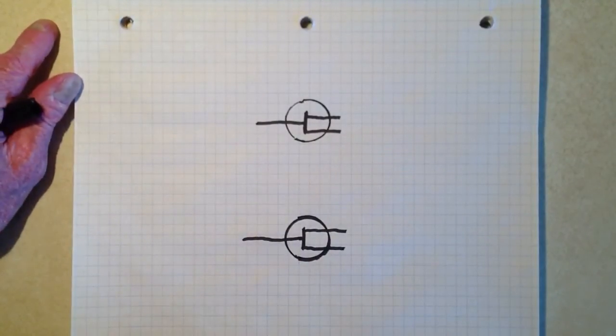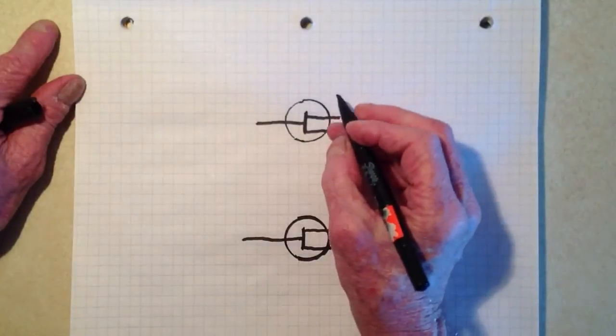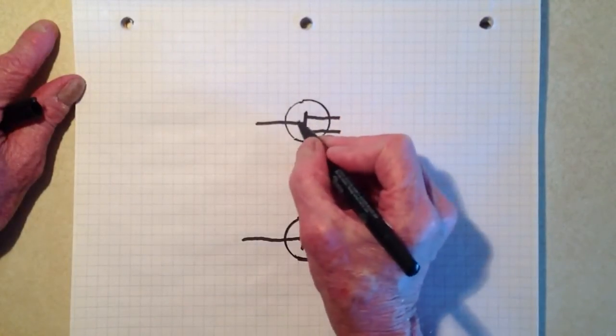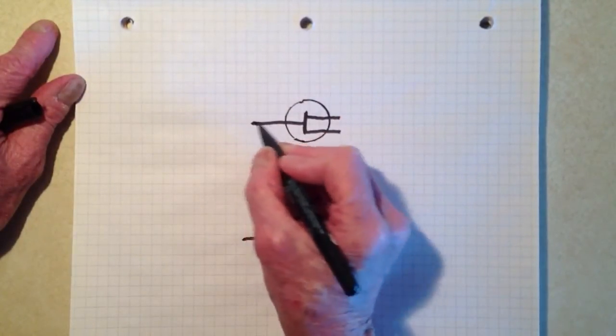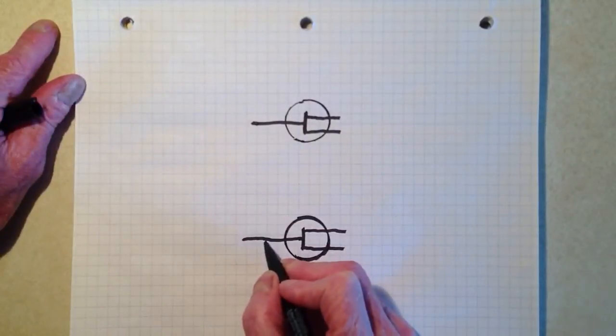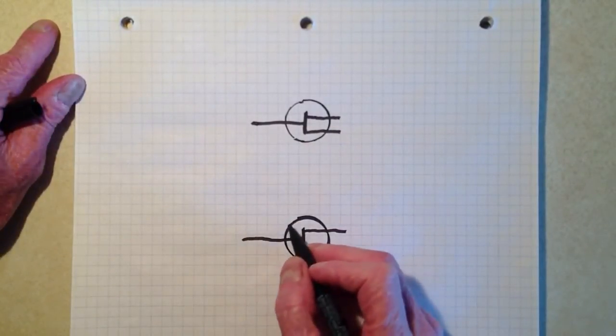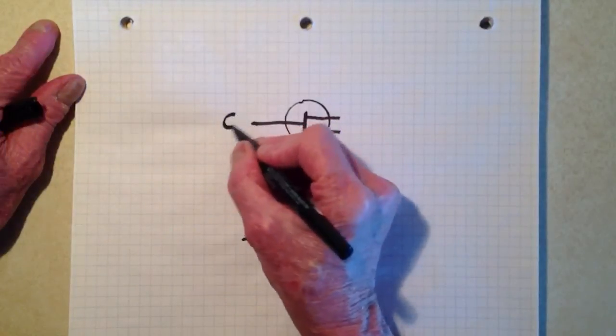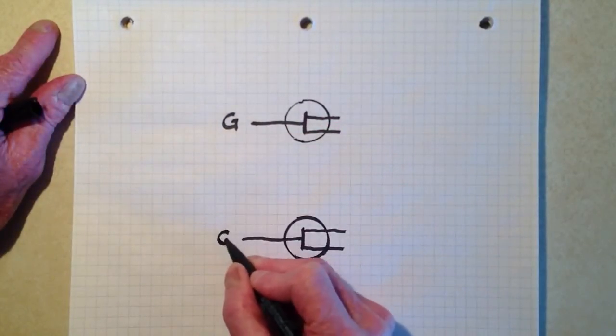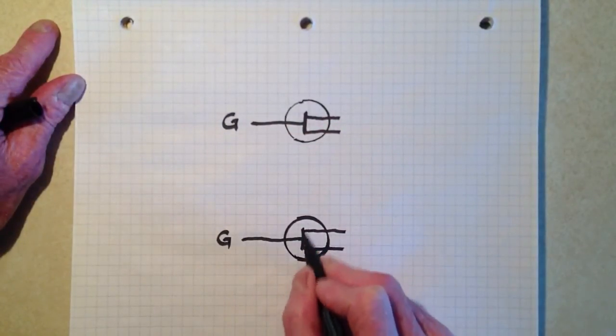There's only one real junction here in a field effect transistor, and that is between the control electrode, or the middle electrode, typically called the gate, and the channel, which is a single piece of semiconductor material.